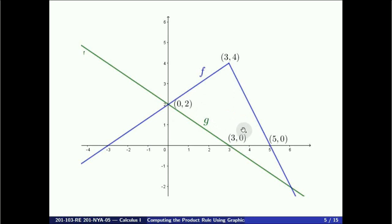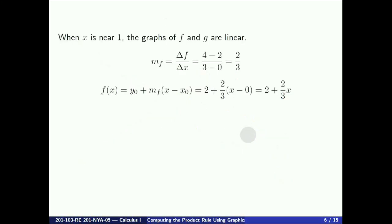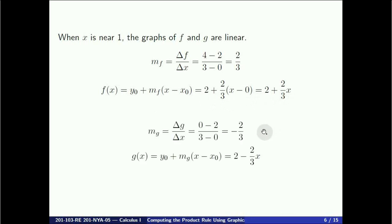With those points we compute the slopes and find equations of each line using the point-slope form. The slope of f is obtained by rise over run using (0, 2) and (3, 4), giving a slope of 2/3. Using (0, 2) as a point, the equation is y equals 2 plus (2/3)x. For g, using (0, 2) and (3, 0), the rise over run gives a slope of minus 2/3, and the equation of the line is y equals 2 minus (2/3)x.